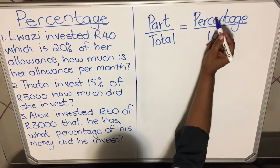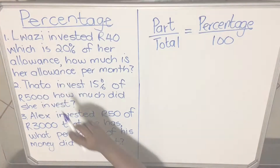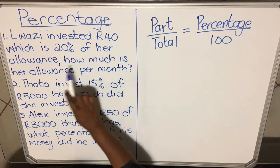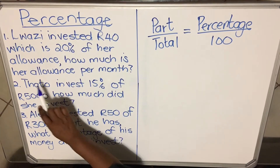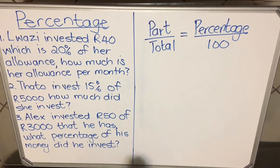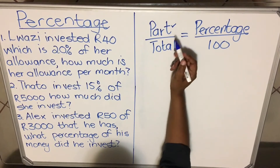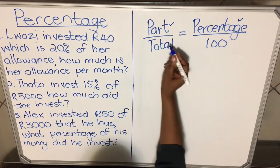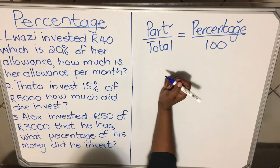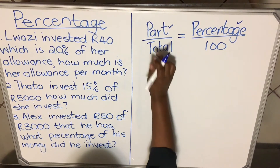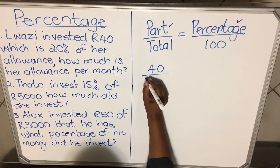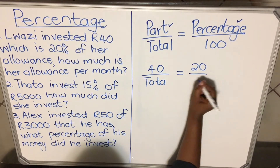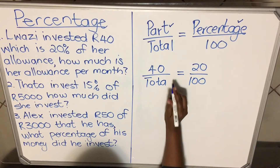We're going to use this formula three times — when you are asked the part, when you are asked the total, and when you are asked the percentage. Let's look at the first example: Yara invested 40 rand, which is 20% of her allowance. How much is her allowance per month? In this question, you are given the part — she's investing 40 rand — and you are given the percentage — 20%. You are asked to calculate the total allowance. So using the formula: 40 divided by total equals 20 divided by 100.